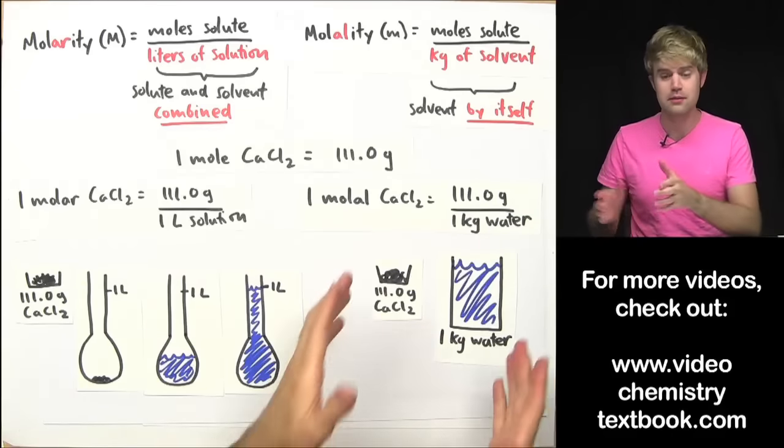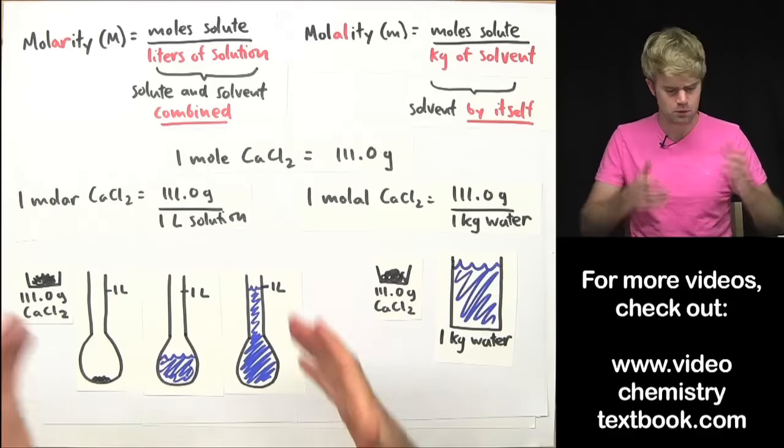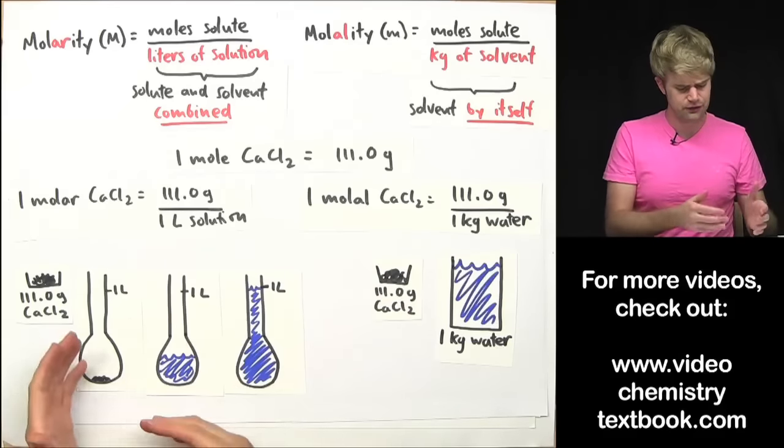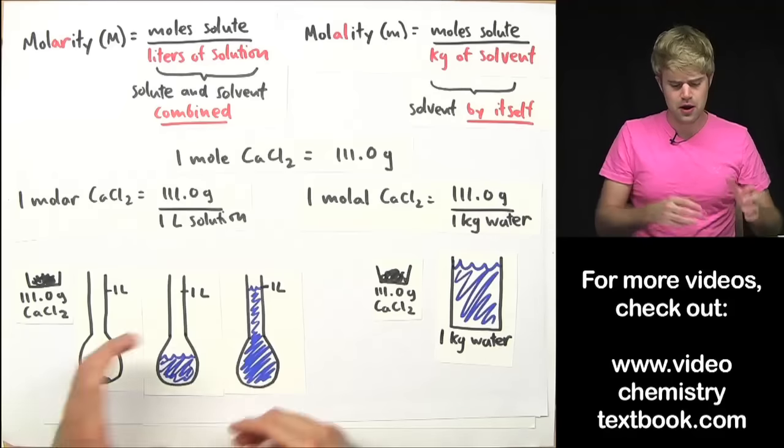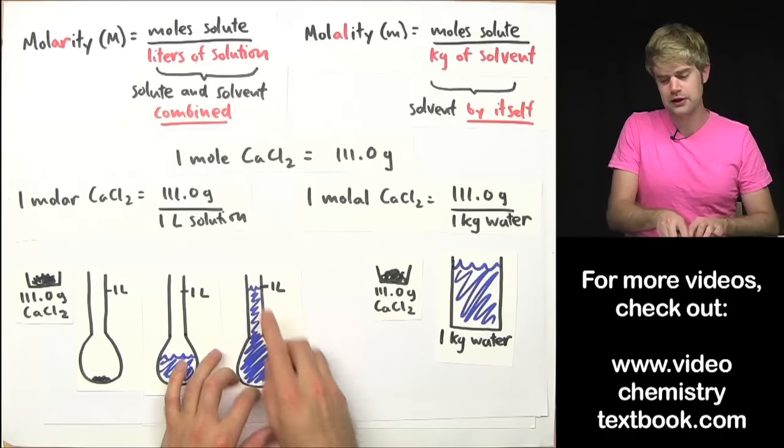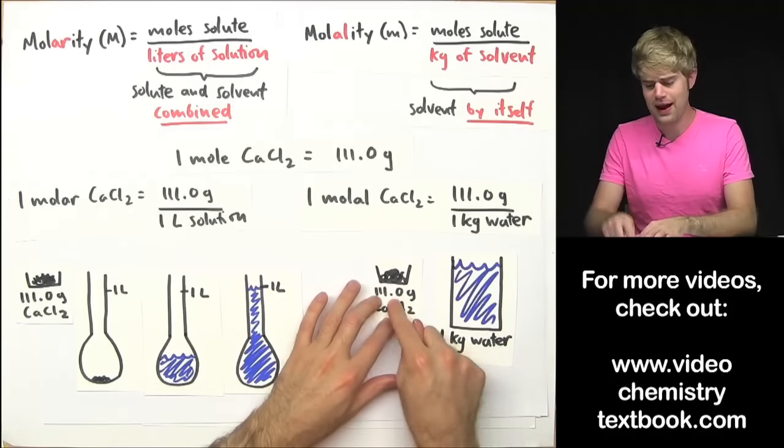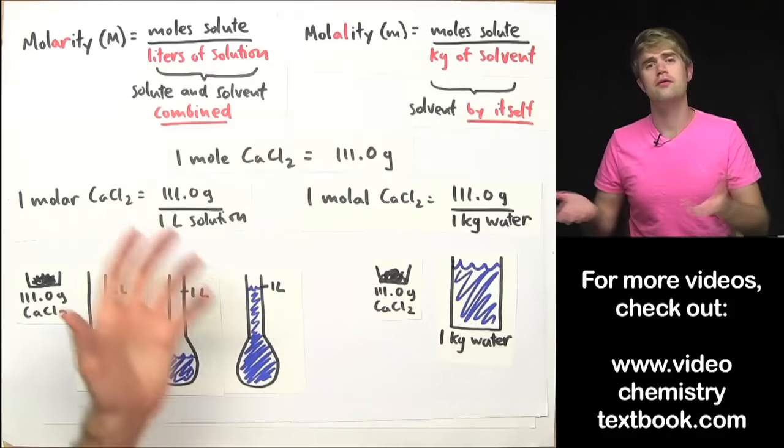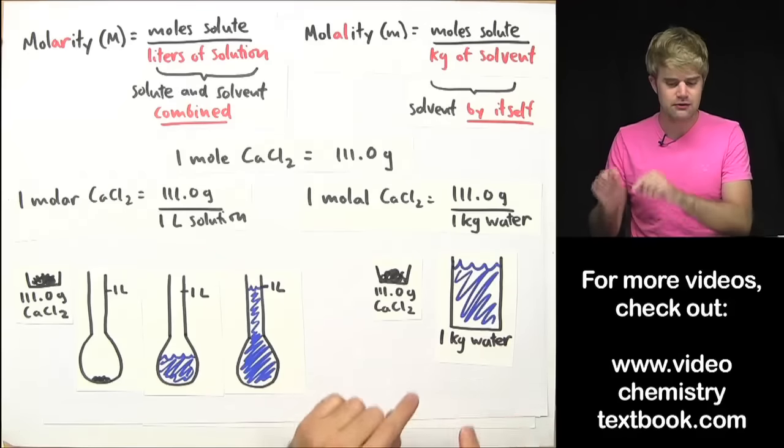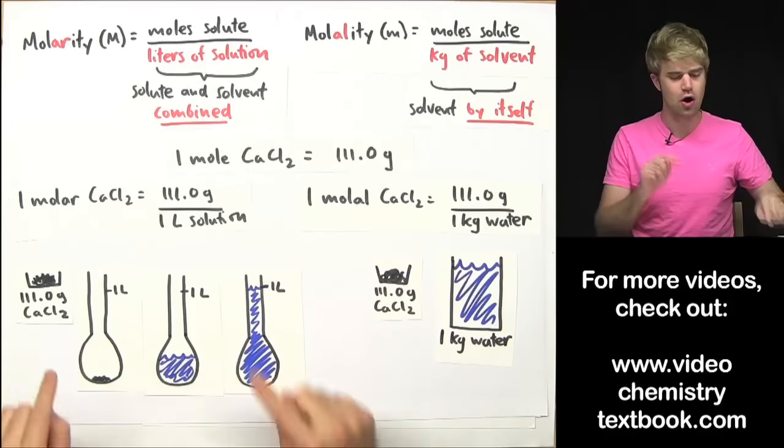Well here's one important thing that makes molality easier. With molar, you got to take a flask, you got to measure the volume, you got to pull it up to this one liter line whereas when you're making a molal solution all you need is a scale. You just weigh out the solute, you weigh out the solvent and you mix them together so that's a big advantage of molality over molarity.